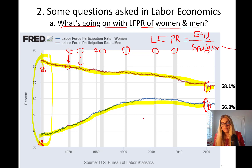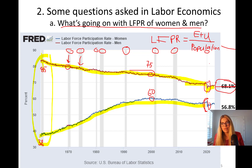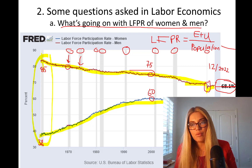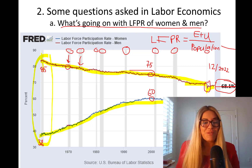Looking at the 2000s, the labor force participation rate for men was about 75% and for women was 60%. So from 38% to 60% — that's a huge development for women; while for men it declined from 85% to 75%. We'll talk about the reasons behind women's increased participation in future chapters. The most recent values from December 2022 are 68.1% for males and 56.8% for females.